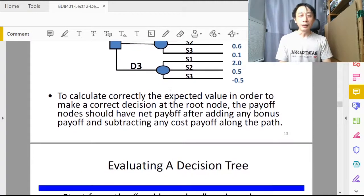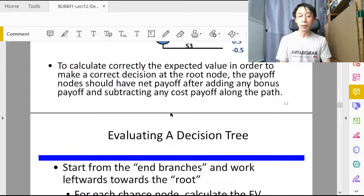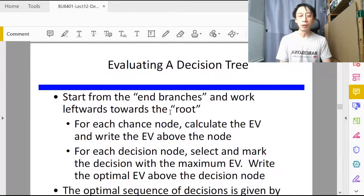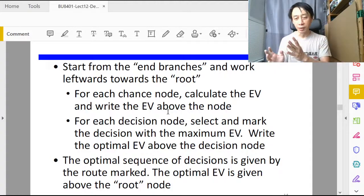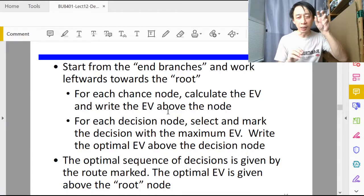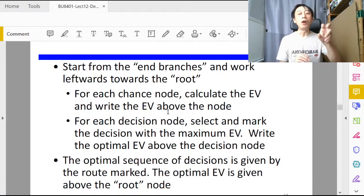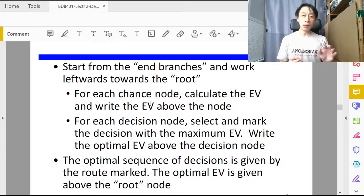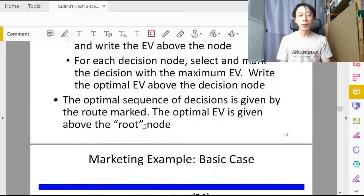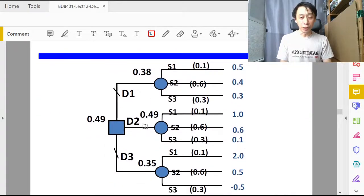What we need to do about decision trees is also to make decisions. The way we do it is that we start from the right side. We always start evaluating a decision tree from the right to the left. And along the way we update the EV, the expected value, of all the circles and all the squares. For each circle, for each event node, for each chance node, we calculate the EV using the sum products of the probabilities, just like we have done using the EV method of decision making. For each decision node we basically take the maximum of the branch EVs.